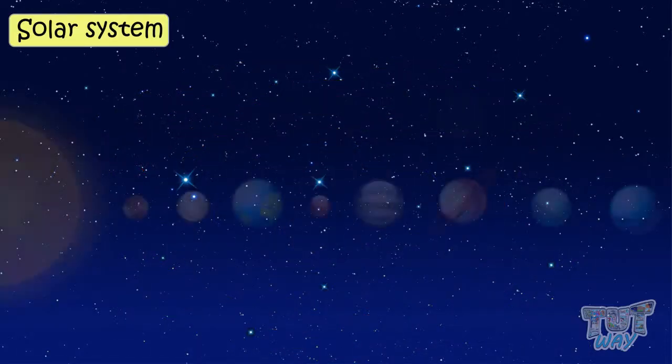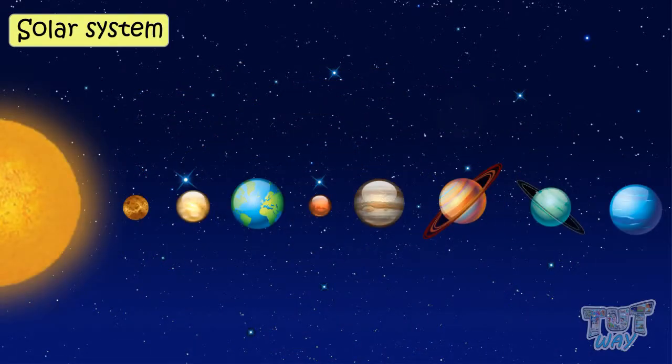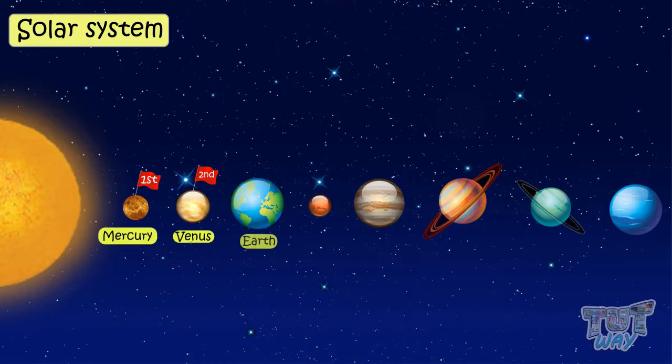There are eight planets that revolve around the sun. Let's learn their names in order of their position from the sun. Mercury, which is the first or nearest. Then, Venus. Then, Earth, our planet on which we live. It is the third planet.